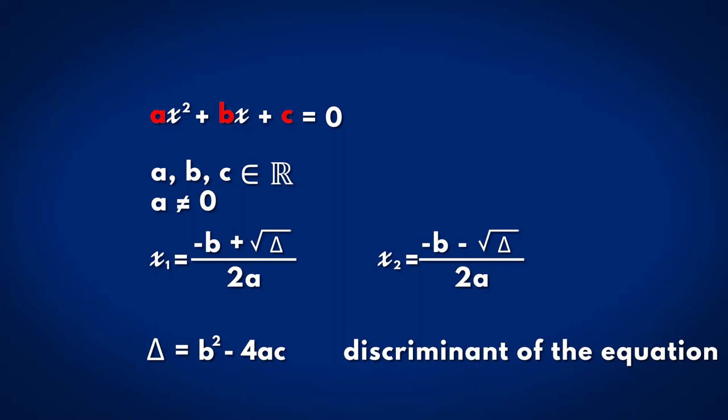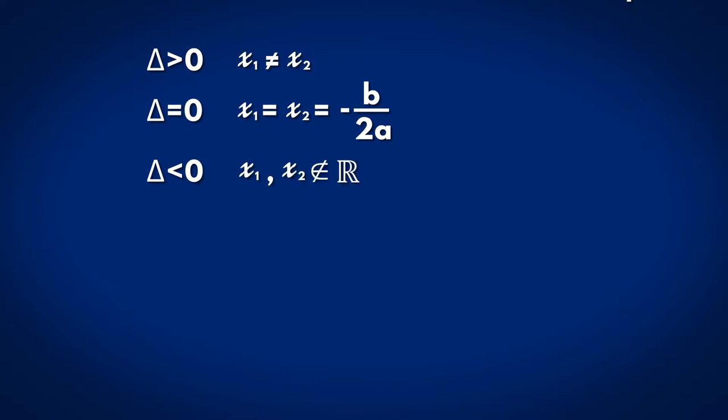In the case delta larger than 0, the equation has two different real solutions. In the case delta equals 0, the equation has two equal real solutions. In the case delta smaller than 0, the equation has no real solutions.